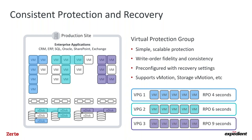Virtual Protection Groups protect those VMs as one logical container and recover them as one entity, meaning every single VM in your application will be recovered to the exact same point in time. The VPG is also where you pre-configure all recovery settings — boot order, network configuration — while maintaining consistency and order fidelity across all VMs. VMware features like vMotion, Storage vMotion, DRS, and Storage DRS are all fully supported.